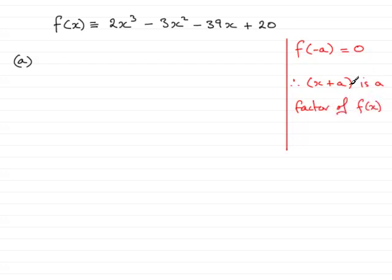So if we're to show that x + 4 is a factor of f(x), then the a value would be 4, and that would mean that I would need to substitute -4 throughout f(x), in the hope that it equals 0. So that's what we're going to do here.